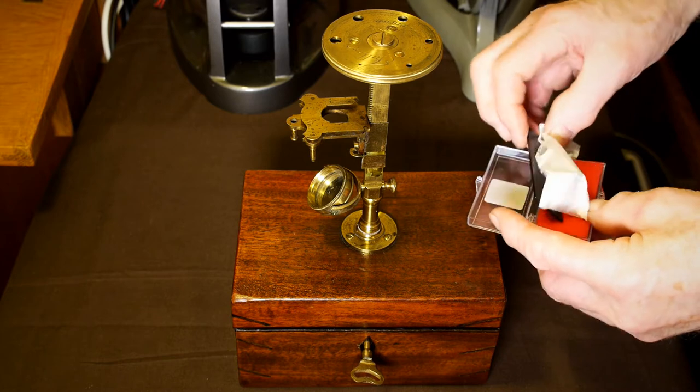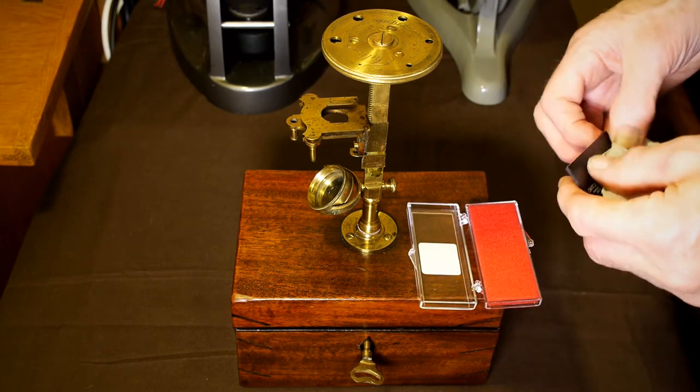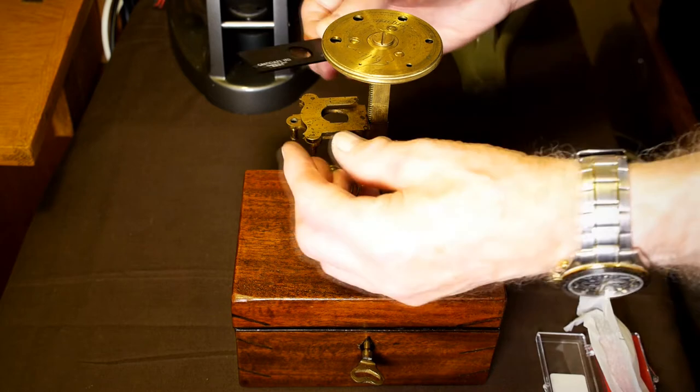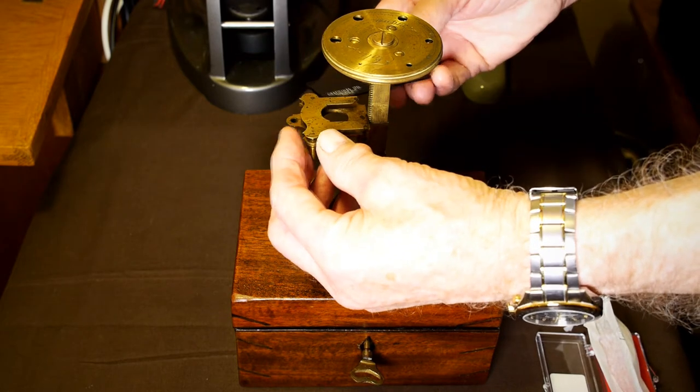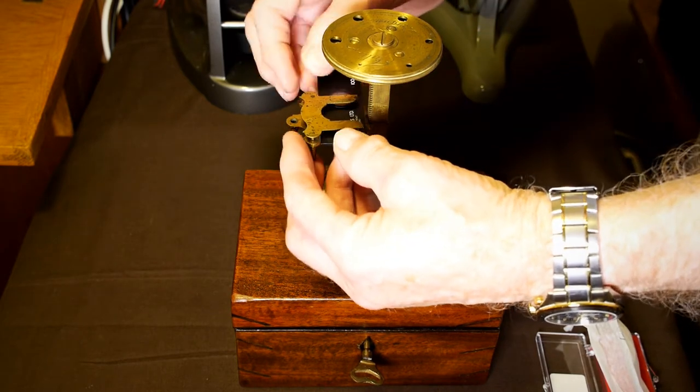We'll use a modern stage graticule marked with 100 divisions each 10 microns apart to enable us to gauge the quality and resolution of the simple lenses used in this particular microscope.